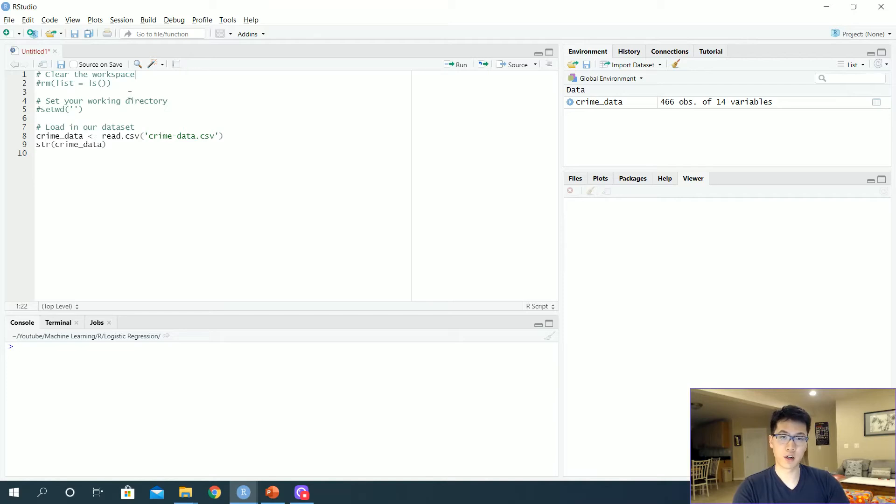As always, we want to make sure that we clear our workspace using this command in R. We want to set our directory to whatever location our data currently exists, and we want to load in our data set. In this case I'm using the crime data.